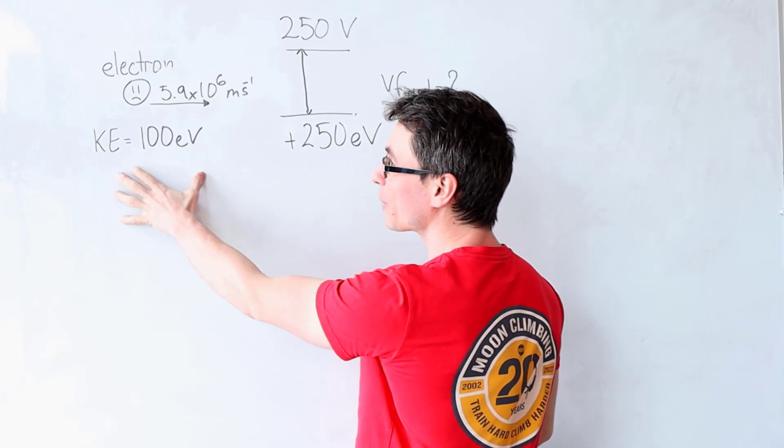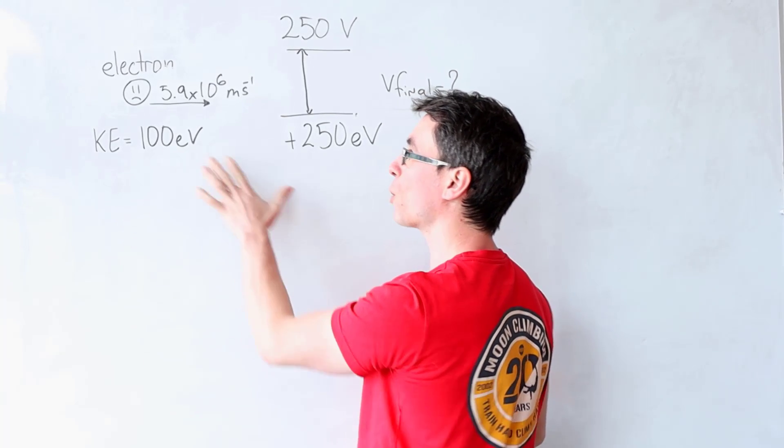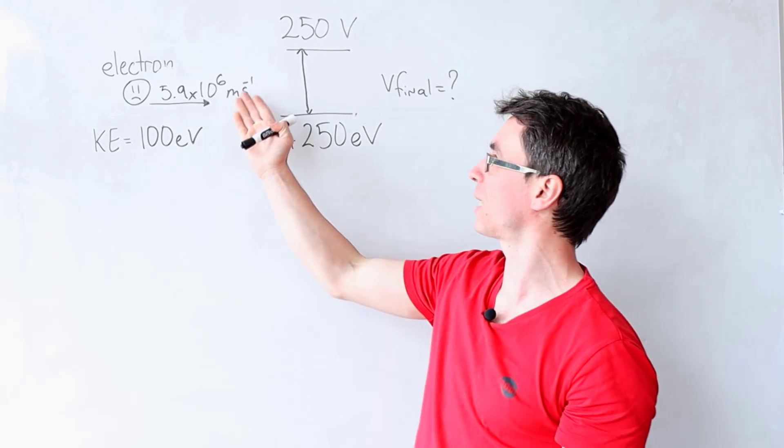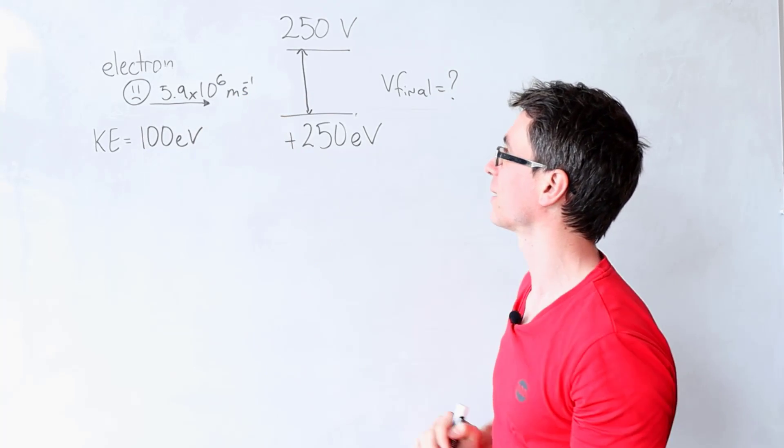We have an electron with an initial kinetic energy of 100 electron volts, which corresponds to an initial speed of 5.9 times 10 to the 6 meters per second.